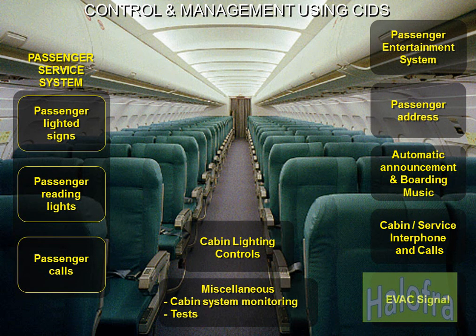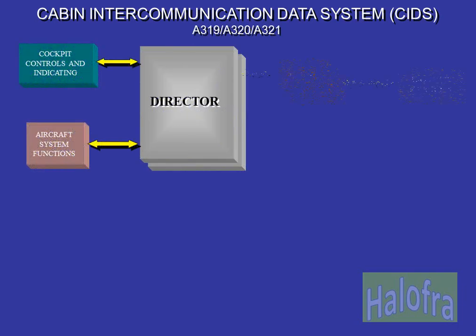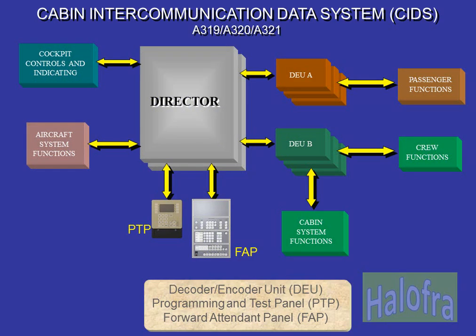The CIDS allows control and management of all the cabin systems. Various cabin systems are controlled, tested and monitored by the cabin intercommunication data system. The CIDS is composed of two directors, one in active mode and one in hot standby. It is linked to the forward attendant panel to control the cabin functions. The director communicates through decoder-encoder units, DEUs, with the cabin, passengers and crew systems.